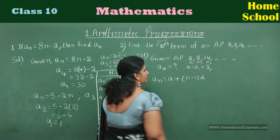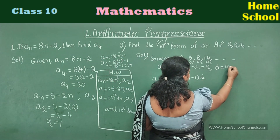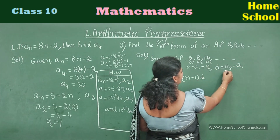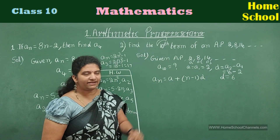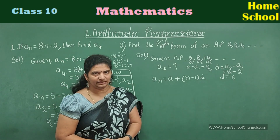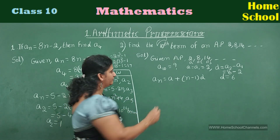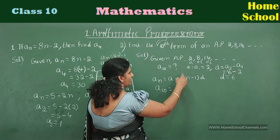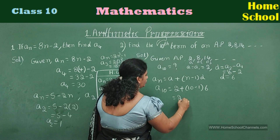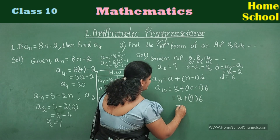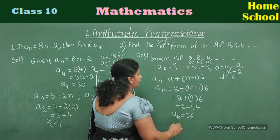Now find the common difference: d = a₂ − a₁ = 8 − 2 = 6. Common difference is 6 and first term is 2. We need to calculate the 10th term. For any AP, first find a, then d, then substitute in the formula. For n = 10: a₁₀ = 2 + (10 − 1) × 6 = 2 + 9 × 6 = 2 + 54 = 56. Therefore the 10th term value is 56.